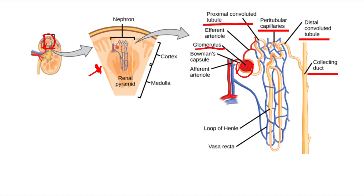There are many different renal tubules. First there's the proximal convoluted tubule — it's very proximal to the glomerulus, and it's convoluted, meaning it's all twisty. As you go down the proximal convoluted tubule, it will eventually descend and become the loop of Henle, which loops down and back up.